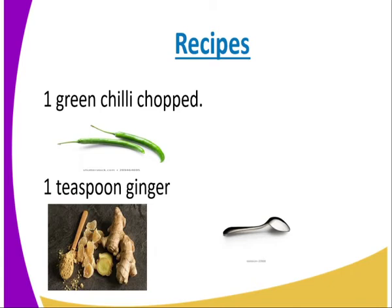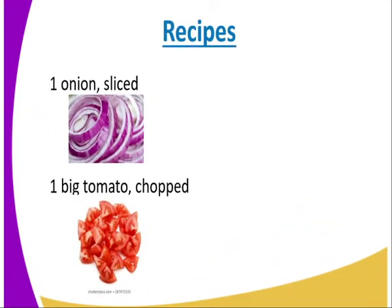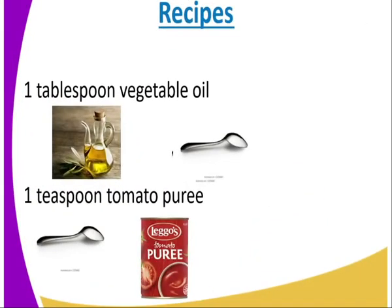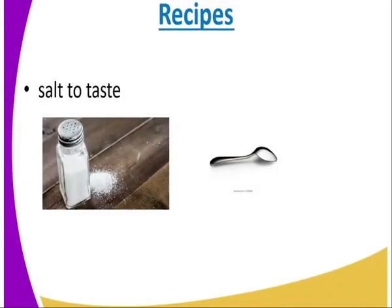We'll need one green chili, chopped — you can see the chilies over there. One teaspoon ginger, which has been mashed from a whole ginger into small slices; we also have it in powder form. One onion, sliced — you can see it there. One big tomato, chopped — you can see it over there. One tablespoon of vegetable oil. One teaspoon of tomato puree — you can see it over there. Those are the ingredients that will be used to prepare our liver.